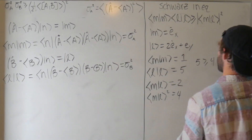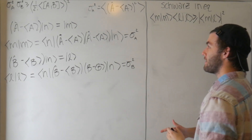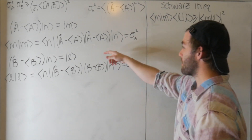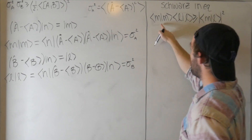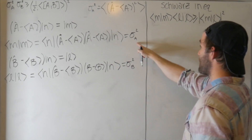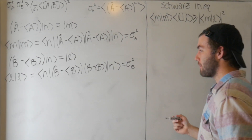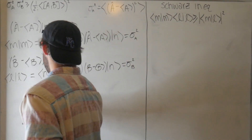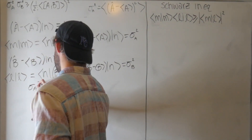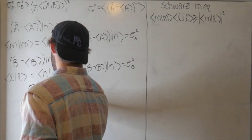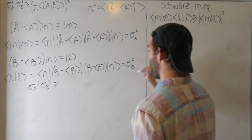The Schwartz inequality is super helpful because with our chosen notation, ⟨m|m⟩ is the variance of A and ⟨l|l⟩ is the variance of B. So this tells us that sigma_A squared · sigma_B squared is greater than or equal to |⟨m|l⟩|².